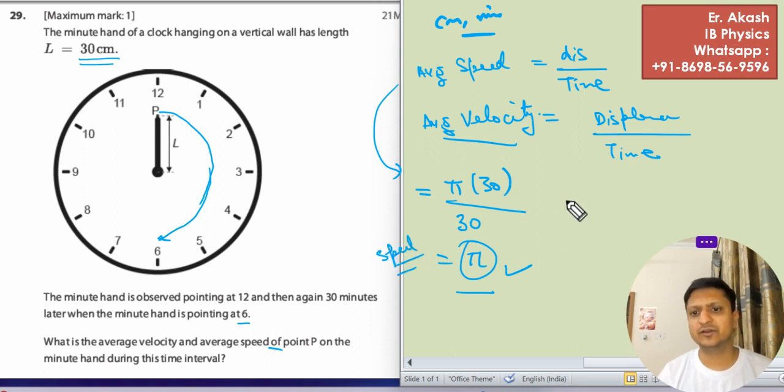Now the velocity. Velocity is 2r. That's displacement upon time. Time is 30 and radius is 30. 2 into 30 by 30, so it becomes 2.